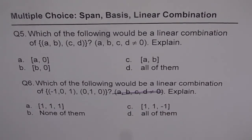The four choices are: (1, 1, 1), (1, 1, -1), none of them, or all of them. Think about it and then write down your answer.